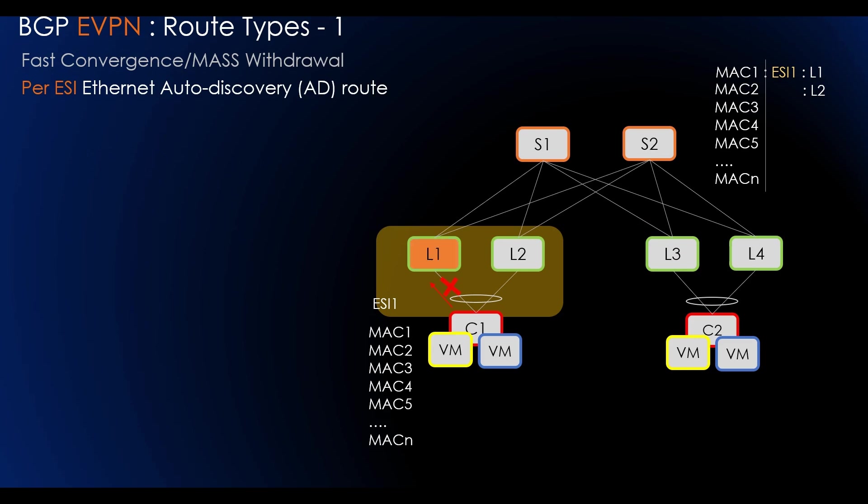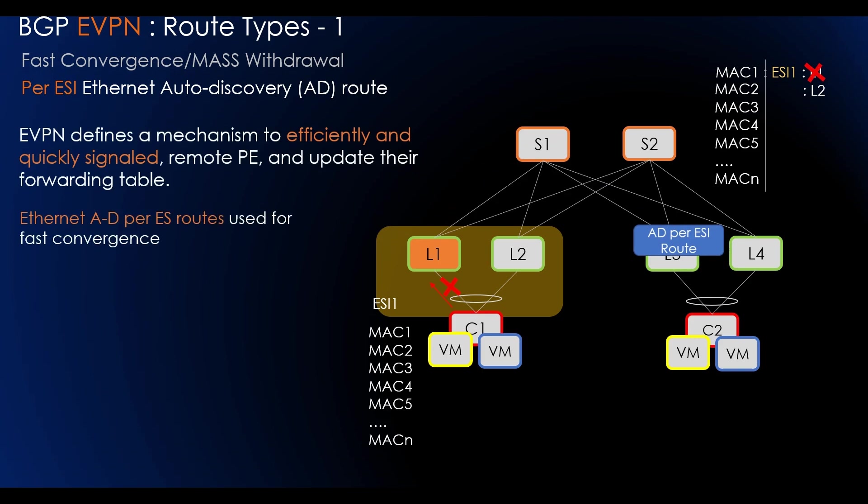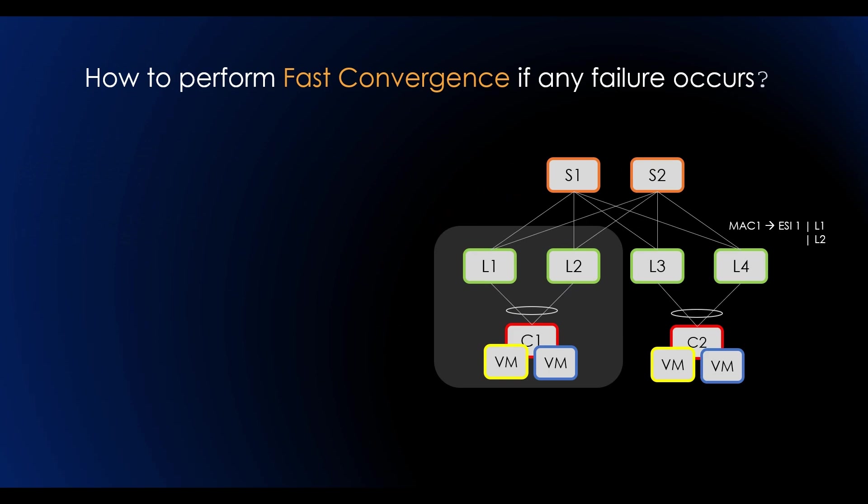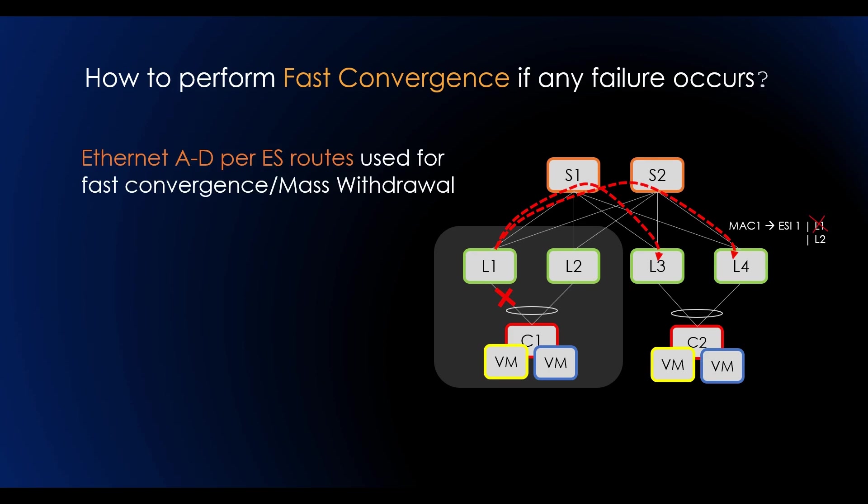Upon failure in connectivity to the attached segment, the PE withdraws the corresponding set of AD per ES routes. This triggers all the PEs that receive the withdrawal to update their next-hop adjacency for all MAC addresses associated with the Ethernet segment. So how to perform fast convergence or mass withdrawal if any failure occurs? We will have AD per ES routes used for fast convergence or mass withdrawal.